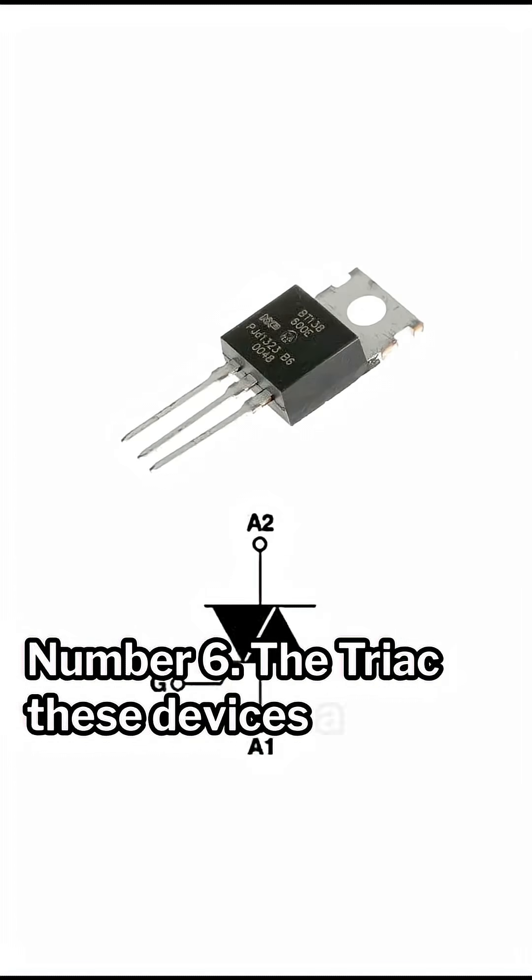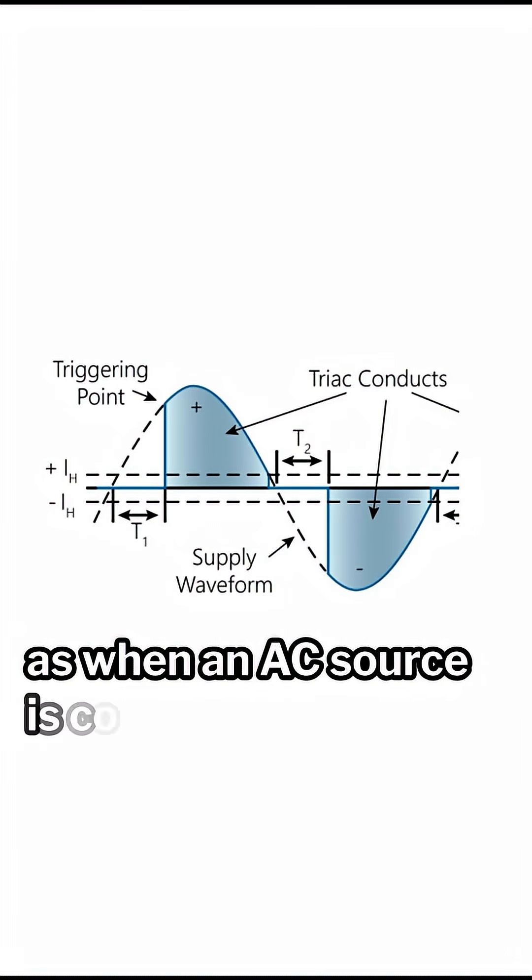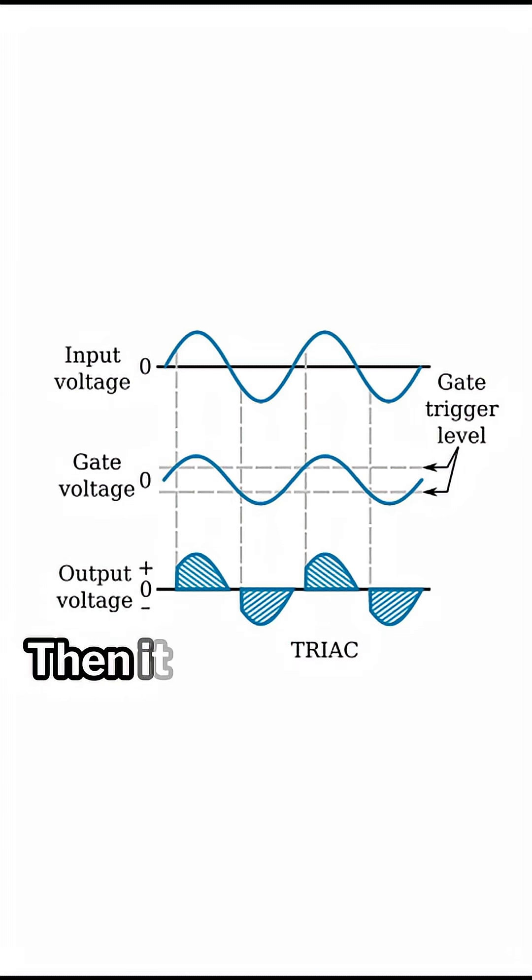Number six: the triac. These devices are very interesting as when an AC source is connected, it will block any signal until it reaches a certain voltage. Then it will allow any signal to pass through until the voltage reaches a certain level.